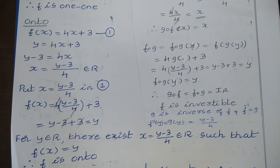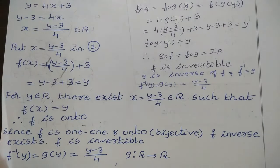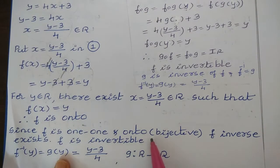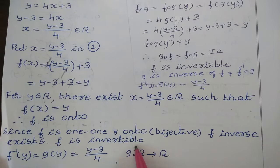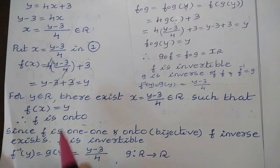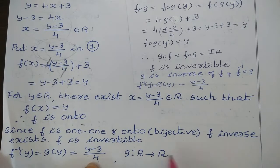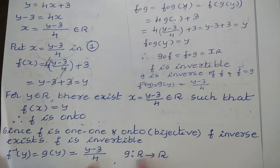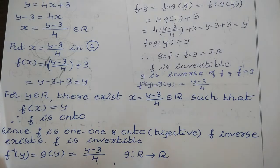Since the function is 1-1 and onto — bijective — the inverse of the function exists and the function is invertible. We write f inverse of y is equal to g of y is equal to y minus 3 divided by 4. In this case there is no change in the domain and co-domain; both remain R to R, as defined in the original function.